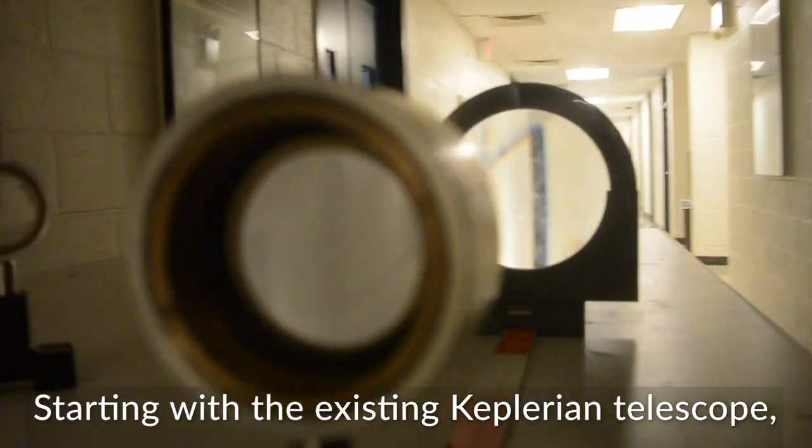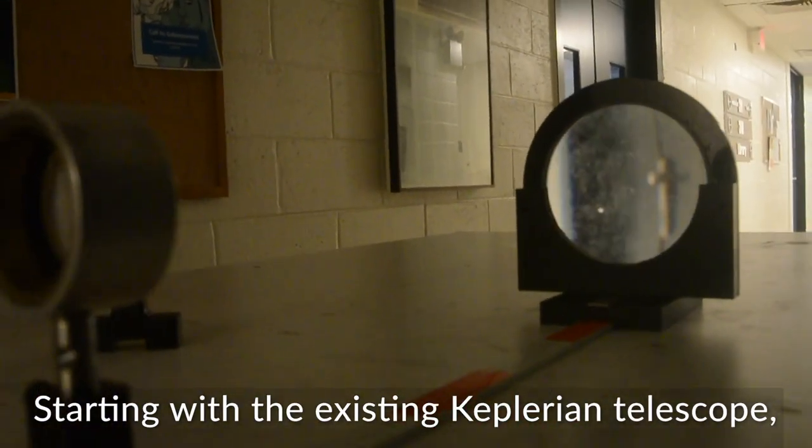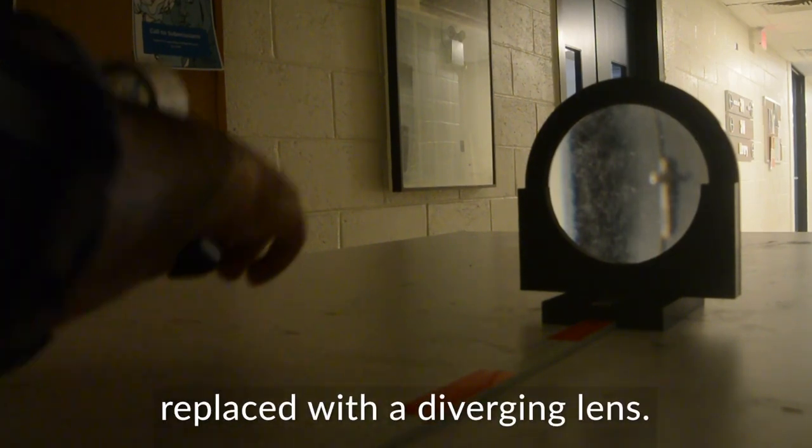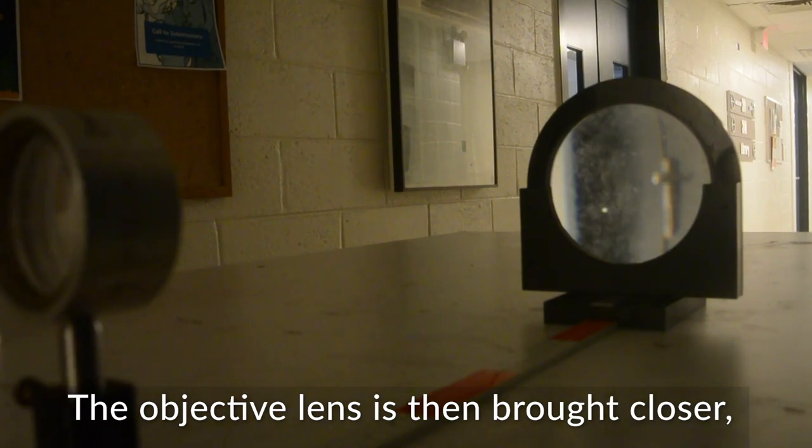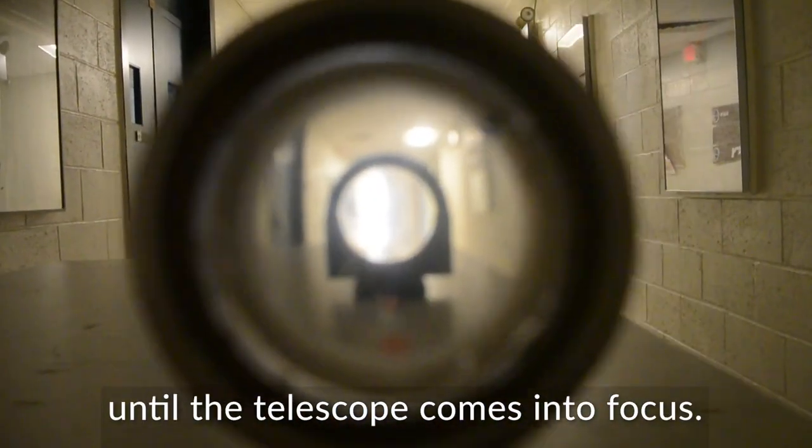Starting with the existing Keplerian telescope, the converging eyepiece is replaced with a diverging lens. The objective is then brought closer until the telescope comes into focus.